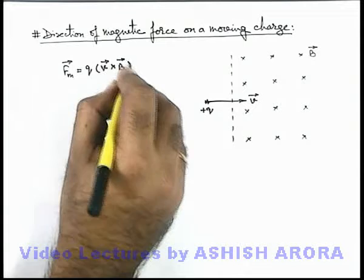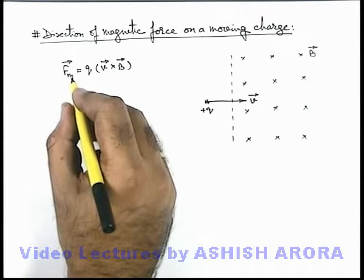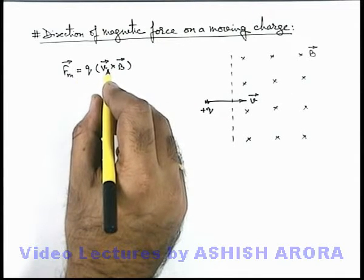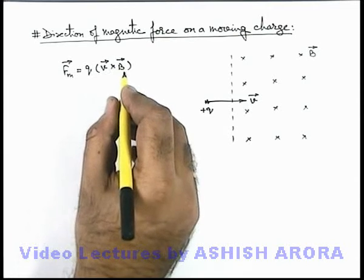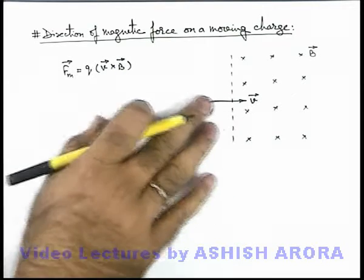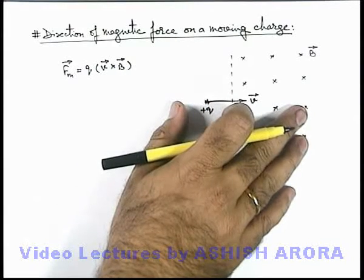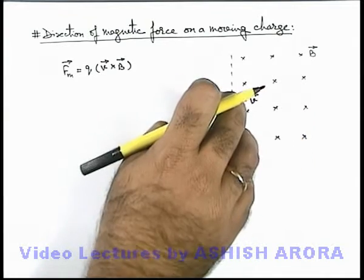So here we can see the direction of magnetic force will be given by the cross product of velocity vector and magnetic field vector. Here velocity vector is in rightward direction and magnetic field is in inward direction.